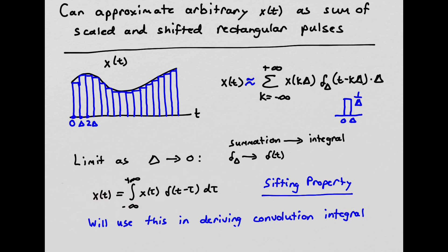So the integral I have is X of T is equal to the integral from minus infinity to plus infinity of X of tau, that's basically this term, delta of T minus tau, that's a shifted continuous impulse, times d tau, which takes the place of the big delta here. And this is known as the sifting property of the continuous time impulse. And we're going to use this in deriving the convolution integral.